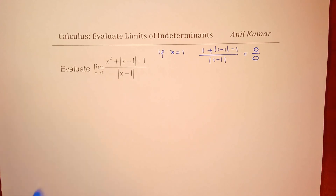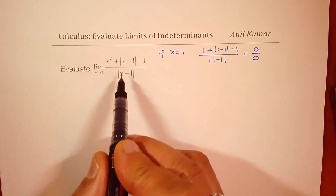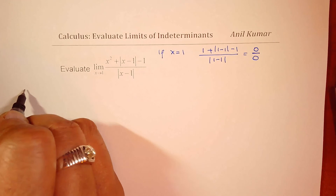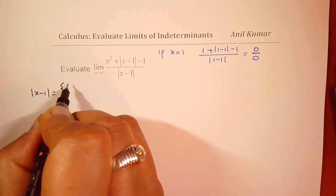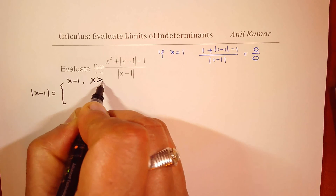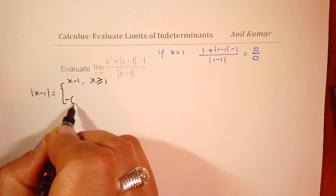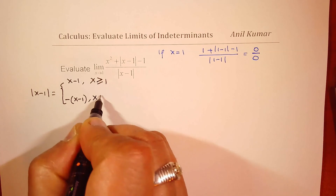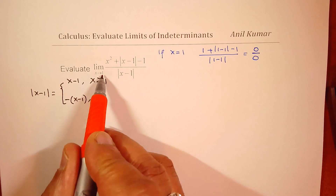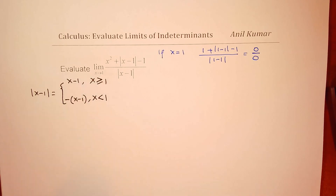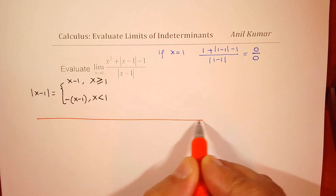Whenever absolute functions are involved, it is good practice to write them as piecewise functions. So the absolute value of (x minus 1) can be written as: positive (x minus 1) for x greater than or equal to 1, and negative (x minus 1) for x less than 1. This means we have to solve this limit in two pieces — one approaching 1 from the left side, and the other approaching 1 from the right side.